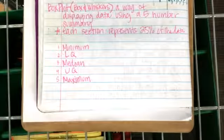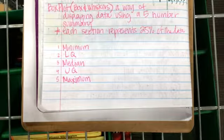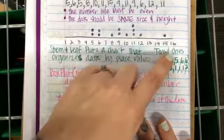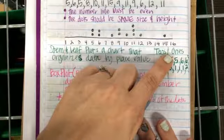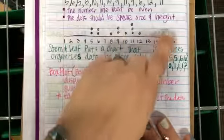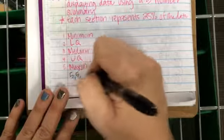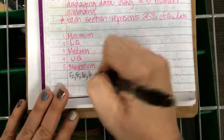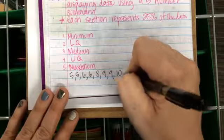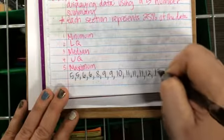Organize the data — I'm going to pull it straight from the dot plot or stem and leaf since it's already in order. My data is: 5, 5, 6, 6, 8, 9, 9, 10, 11, 11, 11, 12, 15.